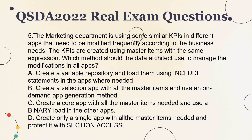A. Create a variable repository and load them using include statements in the apps where needed. B. Create a selection app with all the master items and use an on-demand app generation method. C. Create a core app with all the master items needed and use a binary load in the other apps. D. Create only a single app with all the master items needed and protect it with section access.